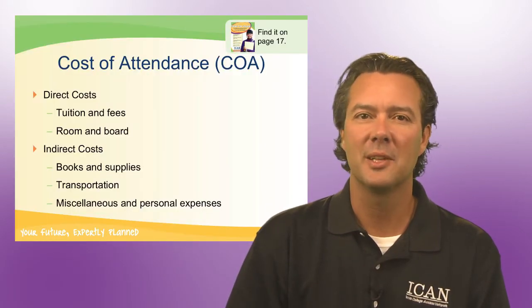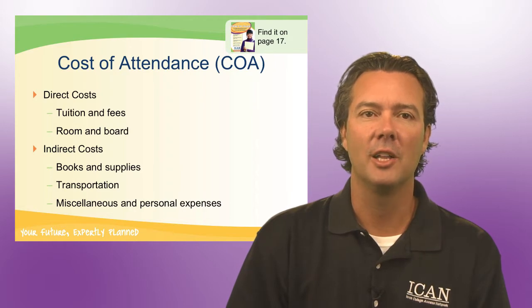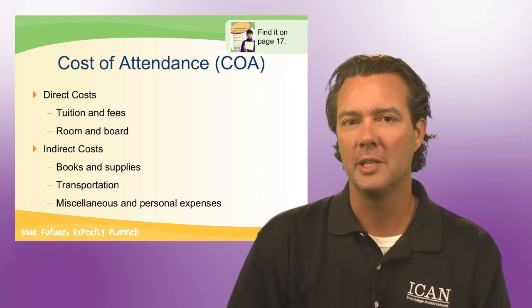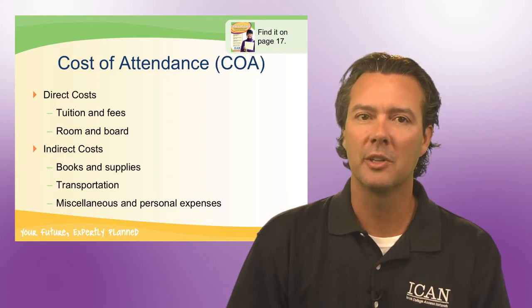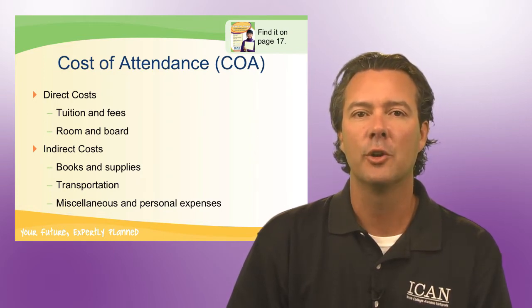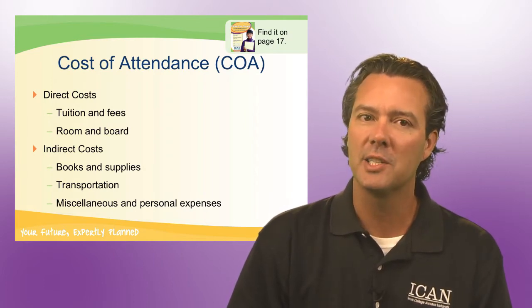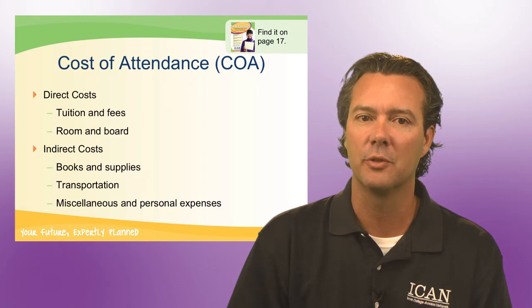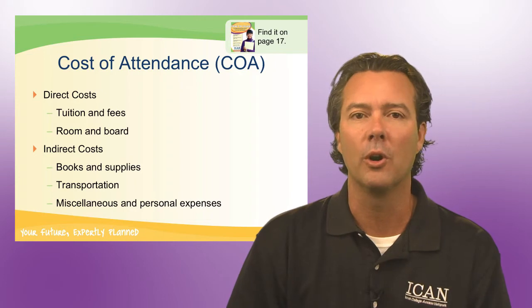One of the first things we want to talk about when interpreting award letters is making sure that you understand what the cost of attendance of the college is. Cost of attendance includes tuition and fees and room and board, but there are also indirect costs — books, transportation, and personal expenses — that the college could estimate between $3,000 and $5,000 for the school year. Put all of those together and that's your COA, or cost of attendance.